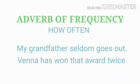The next kind is adverb of frequency, which answers the question 'how often' the action takes place. For example: sometimes, always, never, often, again, once, frequently, usually, seldom. For example, 'My grandfather seldom goes out' and 'Veena has won that award twice.' Both 'seldom' and 'twice' give the answer of how often, so these are adverbs of frequency.